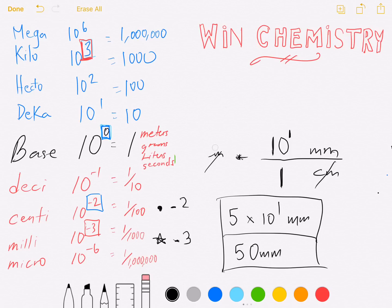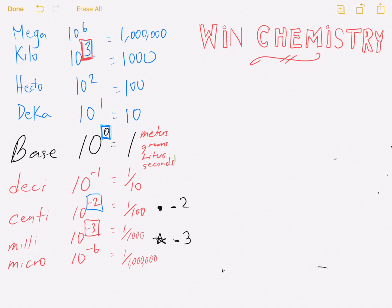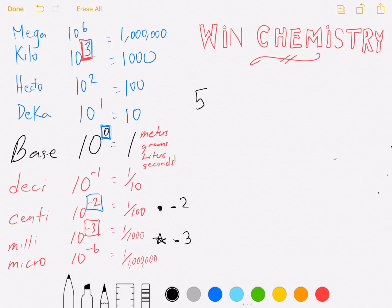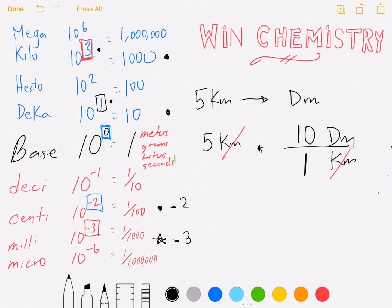One more example — something above the base unit. Let's go from five kilometers and change that to decameters. Five km, draw a time sign, draw a line — upper left, bottom right. Who's higher up? Kilometers gets the one; deca gets the 10. The power difference: comparing exponent three and exponent one — the power difference is two. So the answer is 5 × 10² decameters.